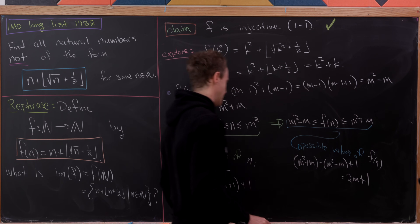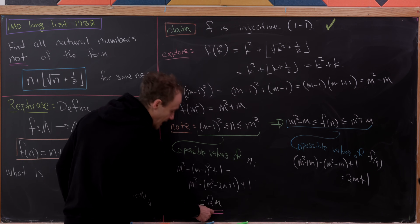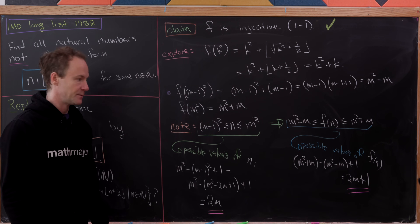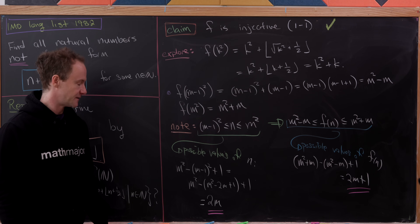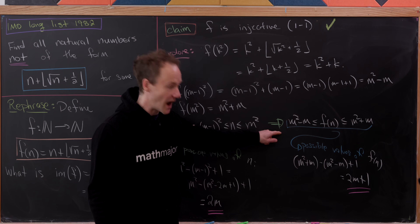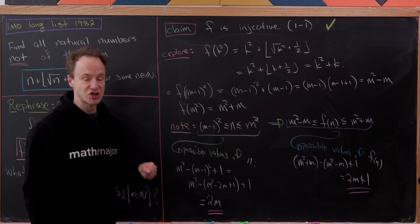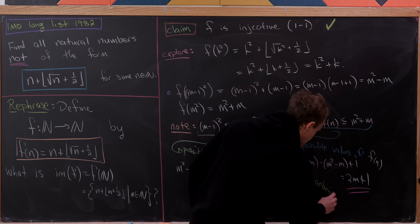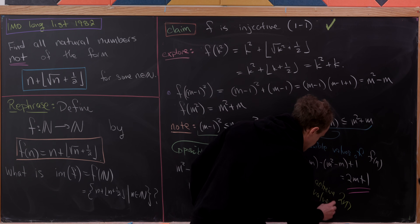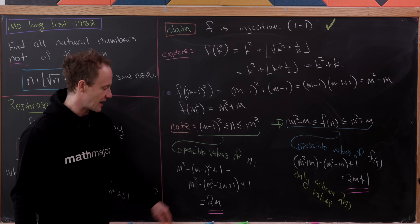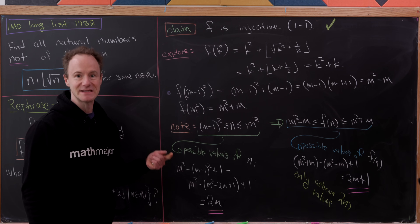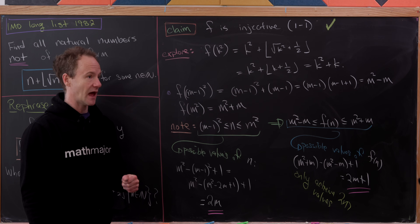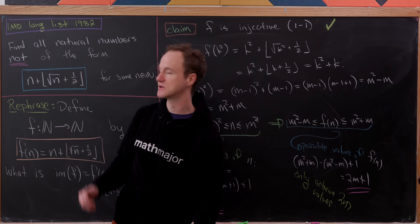The possible values of n number 2m, which is one less than the possible values of f(n), which is 2m+1. But we also know f is injective, so although there are 2m+1 possible output values in that range, we only achieve 2m of them — exactly as many as we have inputs. That means exactly one value in the range [m²−m, m²+m] is missed.